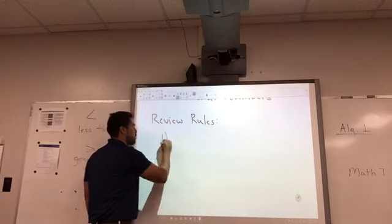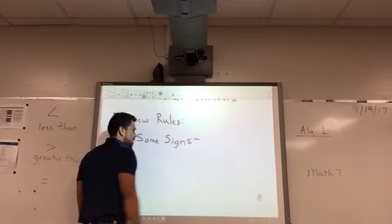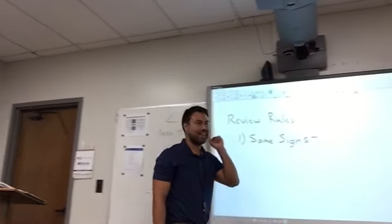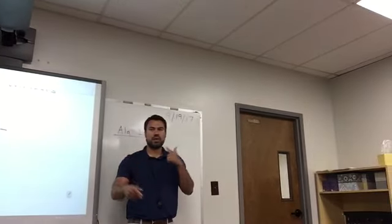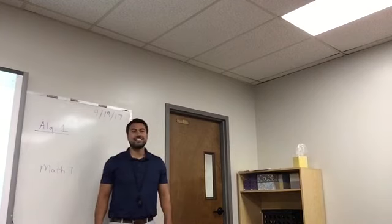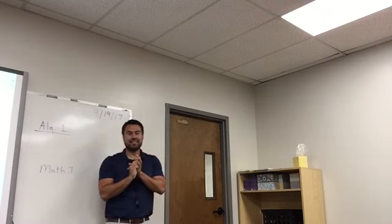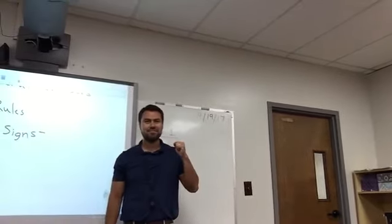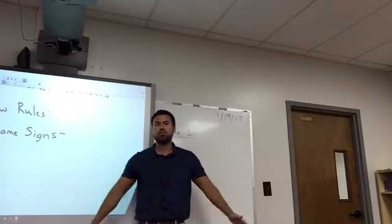So let's review the rules. The first one deals with same signs — adding numbers with the same sign. Does anyone remember the rule? What's the rule for adding two numbers that have the same sign? You add — and there's something else, because you can have two positives or two negatives. Add the absolute values and keep their common sign. Let's put it into a phrase to help us review the rule.